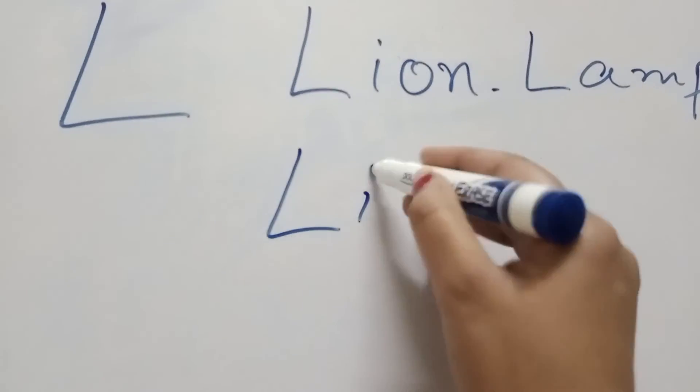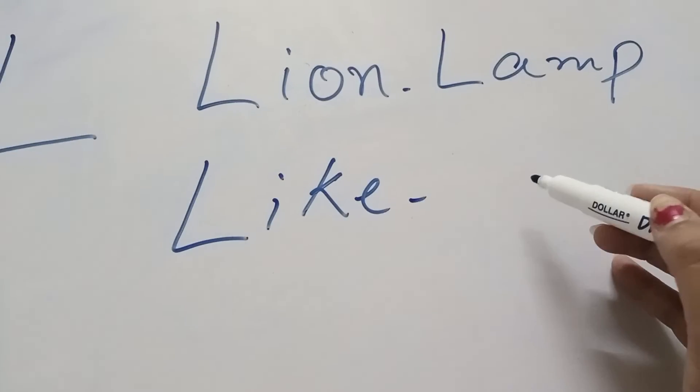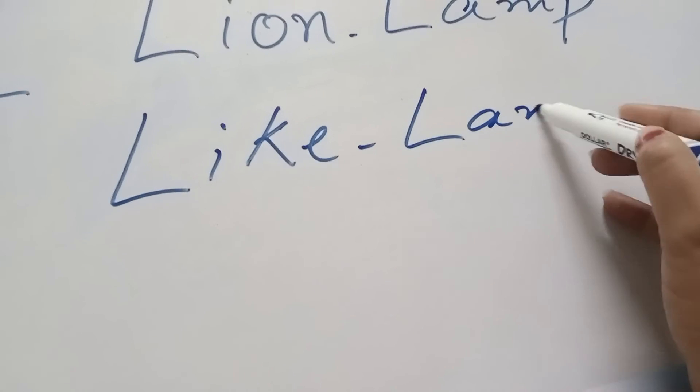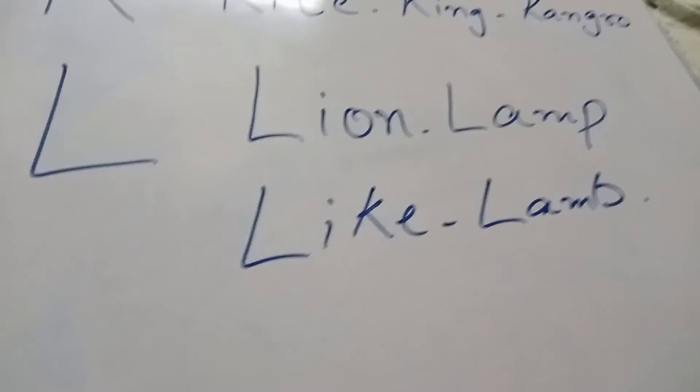L se Like. Yes, like bhi L se hi bantah hai. And L se Lamb. Lamb, Dumba. Ye bhi L se hi bantah hai. Take care. These are the words starting with K and L.